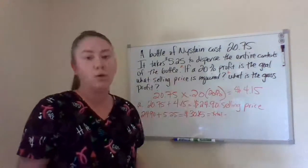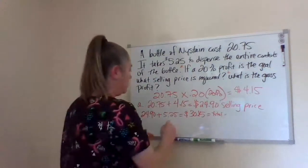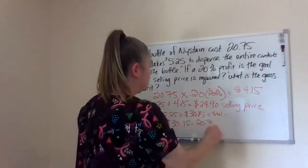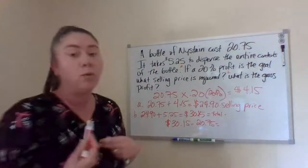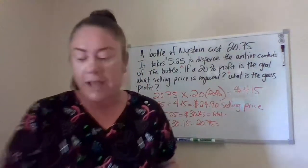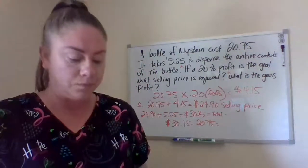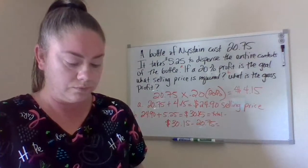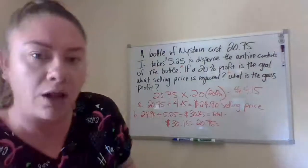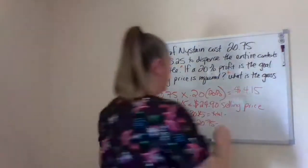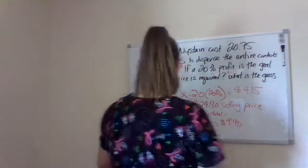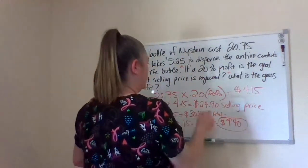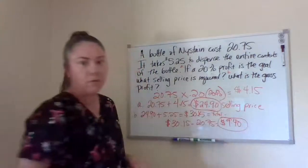So it asks what is our gross profit. $30.15 minus $20.75 — because that's what we paid for it — gives you what we made. So we made a $9.40 profit. That is the answer for B, and $24.90 is the answer for A.